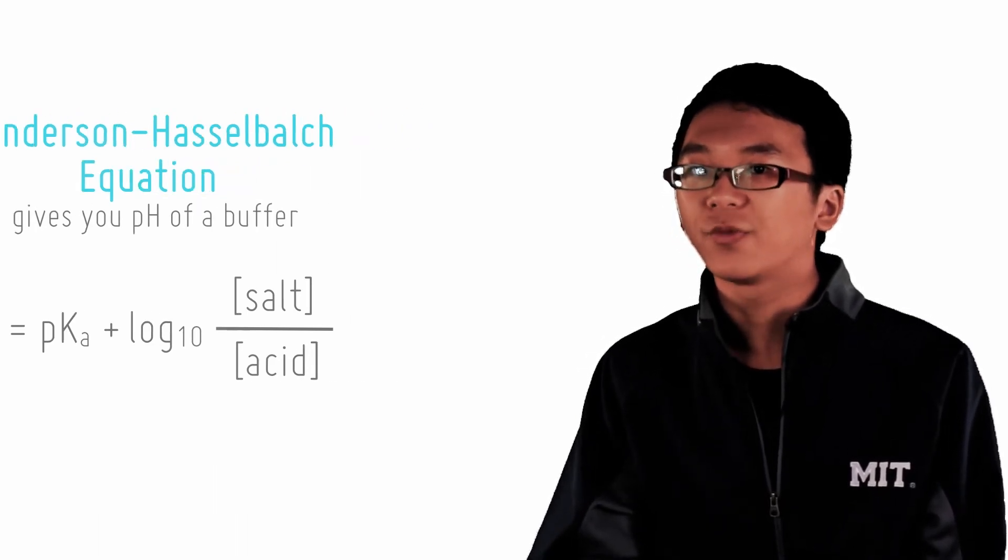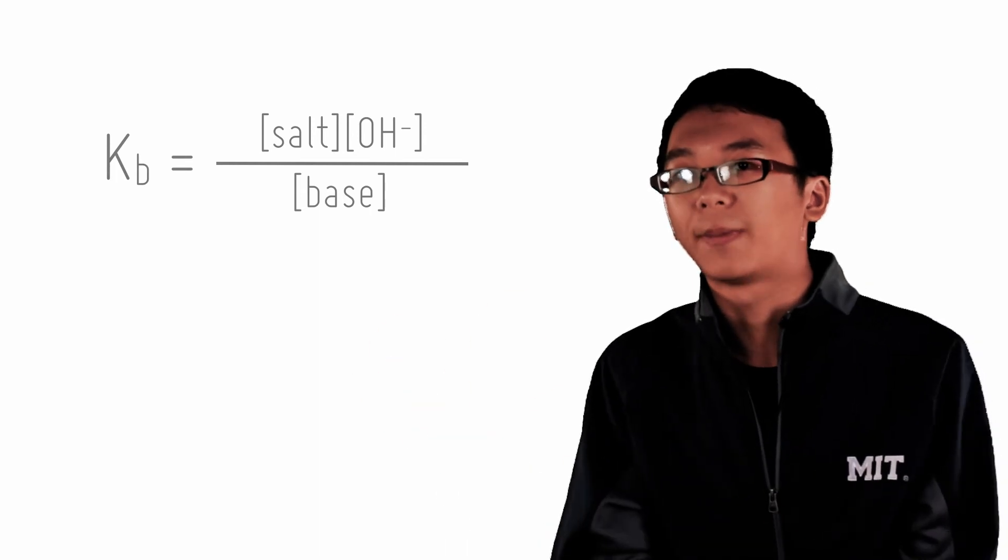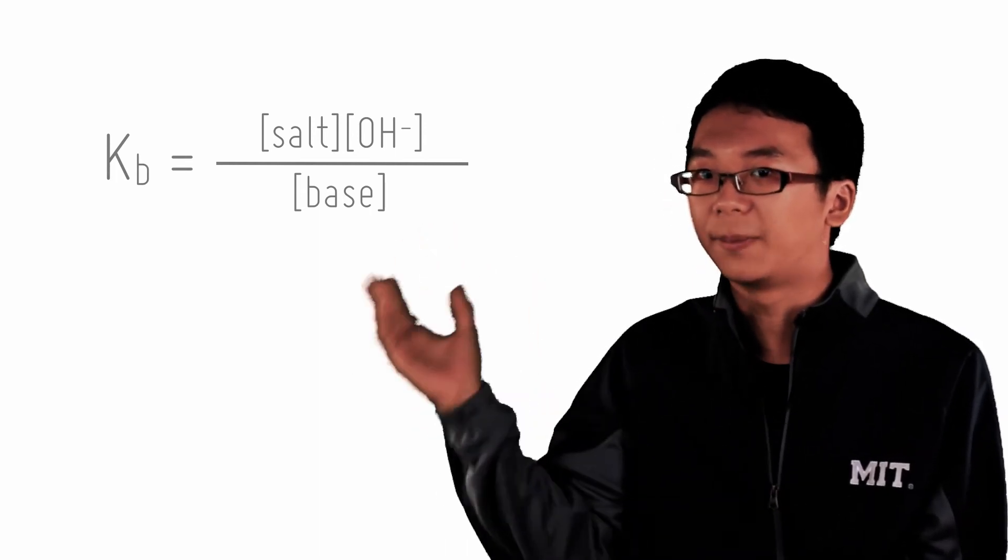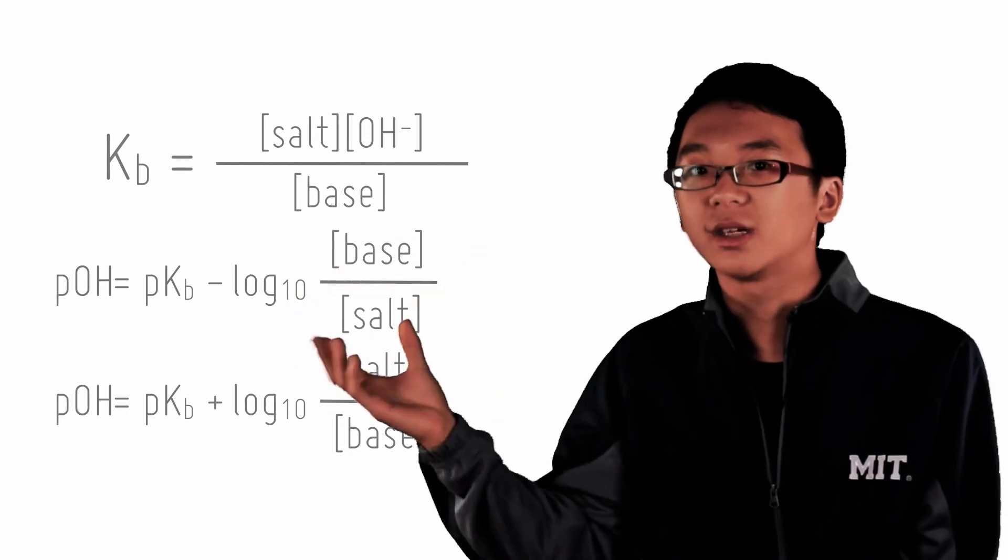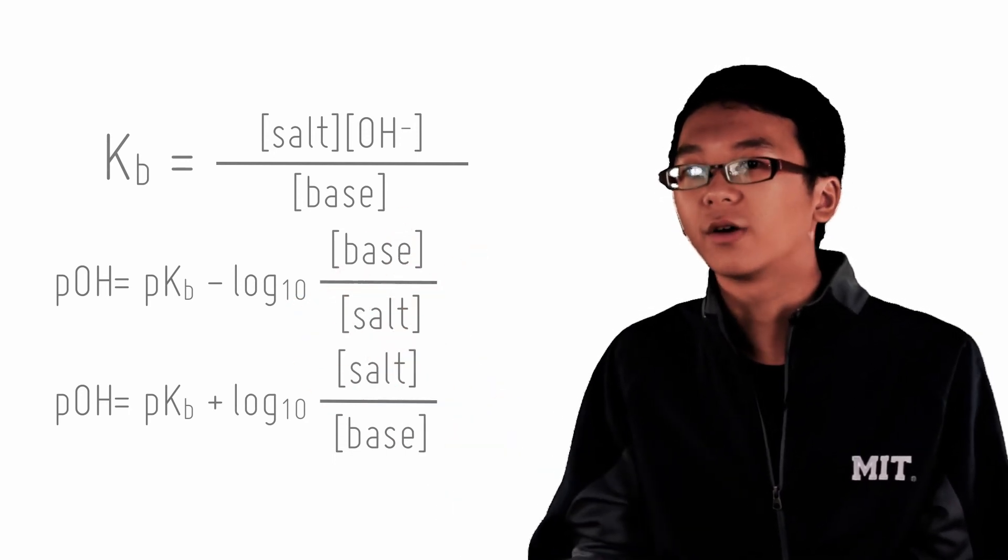We can do this all again for a basic buffer as well. Concentration of hydroxide equals Kb multiplied by the salt over the base. Move over, log both sides, make positive, and we get this expression which is very similar to the one for the acidic buffer.